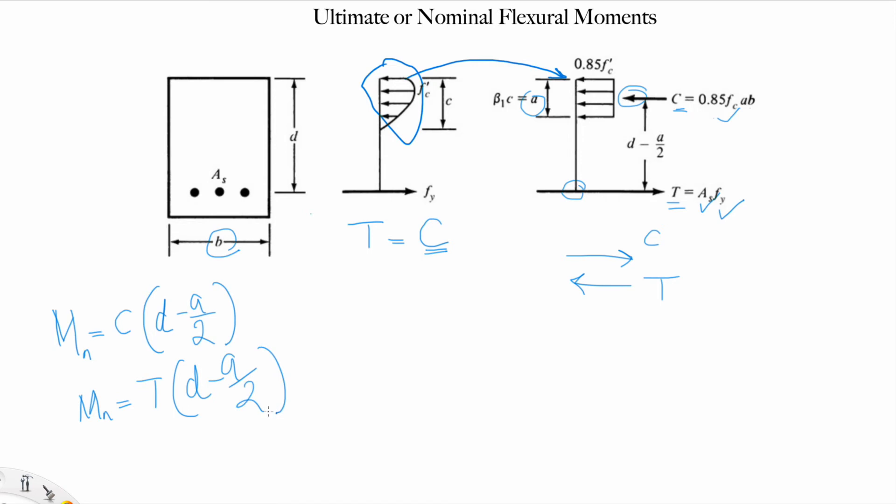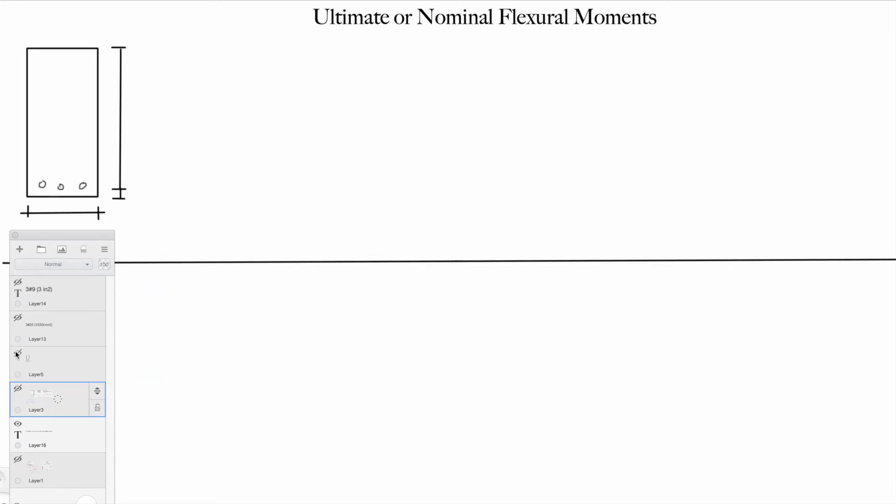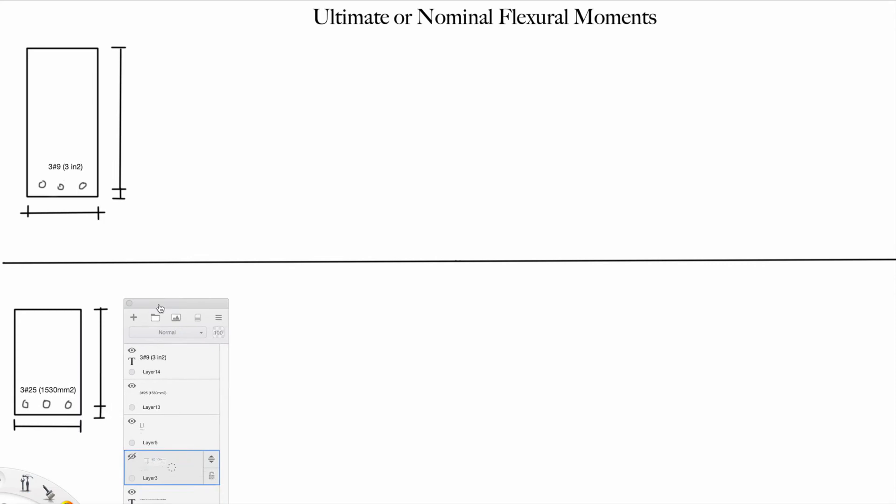This is what we call the nominal flexural moment, the non-linear part of it. This is the design stage where we design our beams. Nobody designs for service; we check the deflection for service but we don't design for it. Let's take these examples. We have two beams.